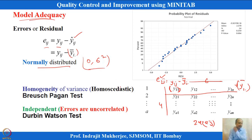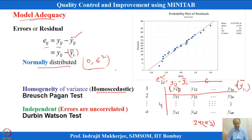The second condition to verify is whether the residuals are homoscedastic — meaning the variance of the residuals does not change with levels of X. Variance of the residuals needs to be checked. This is one check done initially when implementing analysis of variance.